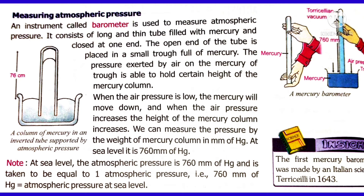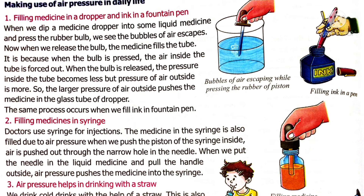First, filling medicine in a dropper and ink in a fountain pen — these all function because of air pressure. Suppose you want to fill a pen with ink using a dropper. You put the dropper inside the ink, but simply placing it won't fill it. You have to press the dropper to push the air inside out. Now, air pressure inside the dropper is less and outside air pressure is more, which pushes the liquid in. When you release the dropper, the liquid is pushed inwards and the dropper is filled with ink, which we can then use for filling a pen.